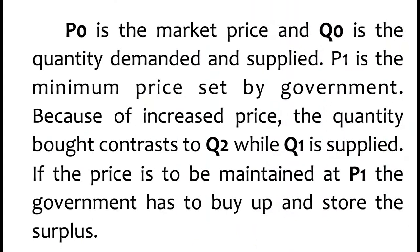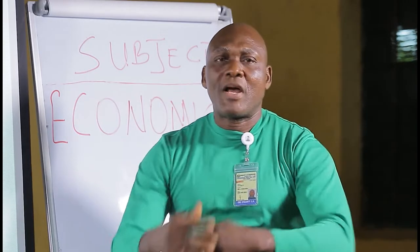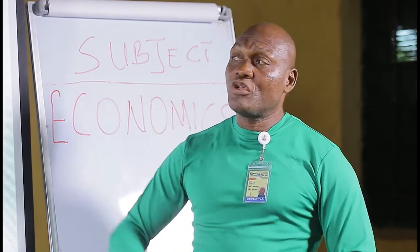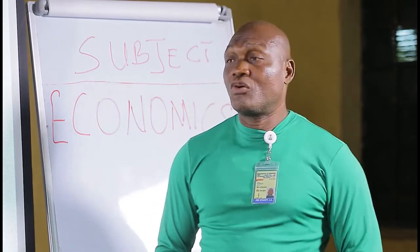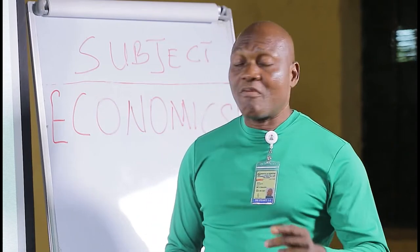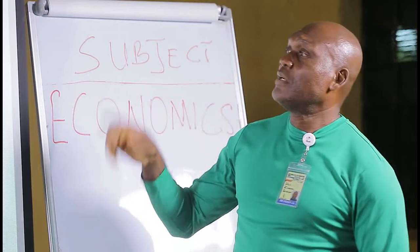If government does not store the surplus, because of the surplus commodity in the market, the price of that commodity must fall due to the law of demand and supply. So government must step in and buy up the surplus in order to still maintain the price.